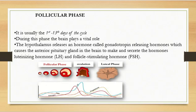When the estrogen reaches its peak, it sends another feedback to the pituitary gland, but this time it no longer sends a negative feedback — it sends a positive feedback, which leads to an increase in the production of luteinizing hormone. This happens around 36 to 48 hours before the release of the egg, which is ovulation.